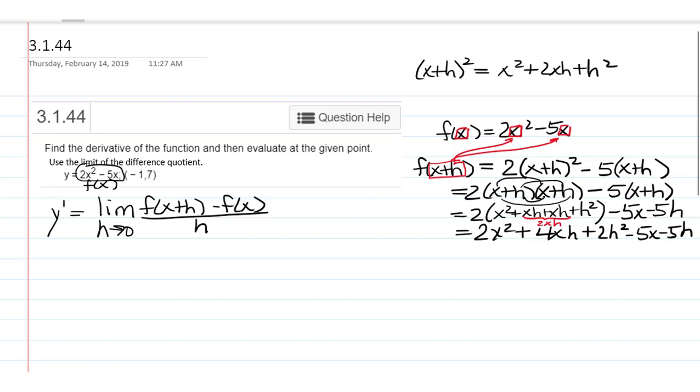Okay, so that was just the f of x plus h part that we just found here. And from that, we are going to subtract f of x. What's f of x? Well, that's just the original function, 2x squared minus 5x.